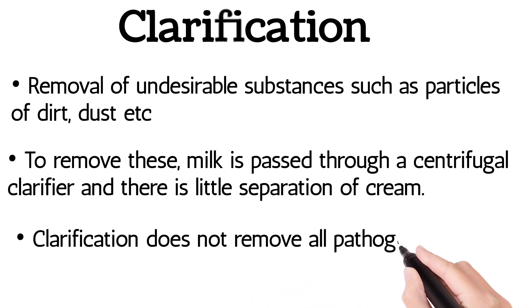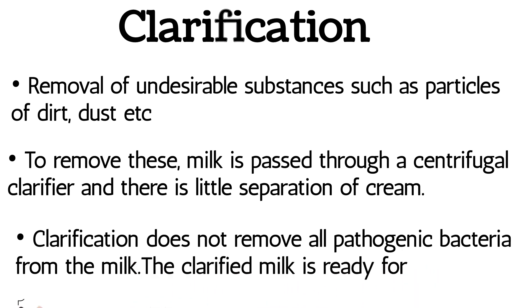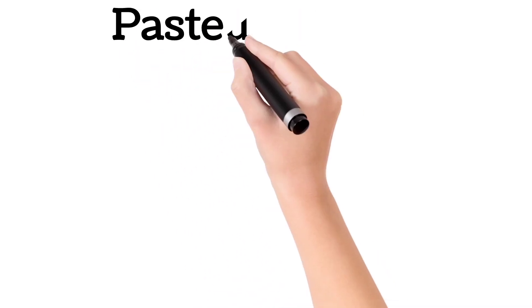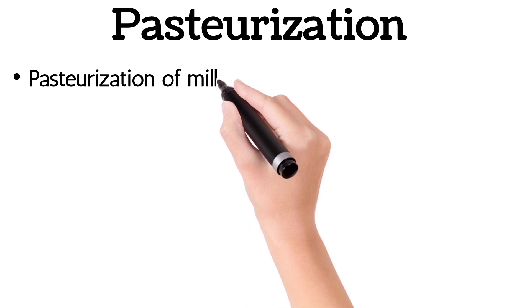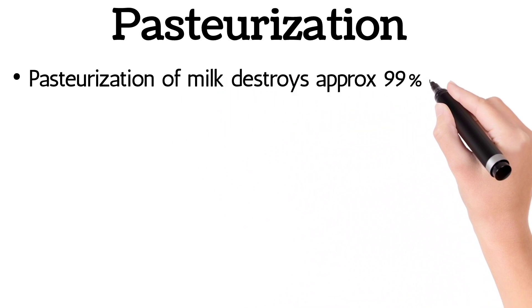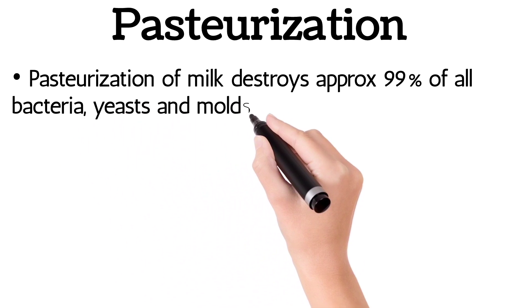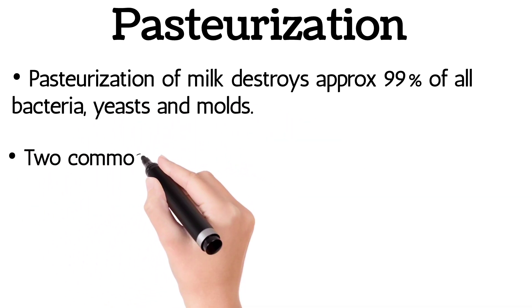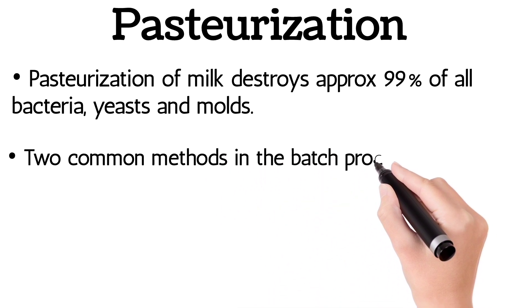Clarification does not remove all pathogenic bacteria from milk. The clarified milk is ready for pasteurization. Pasteurization of milk destroys approximately 99 percent of all bacteria, yeasts, and molds. Two common methods in the batch process are: